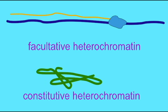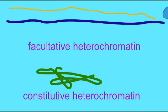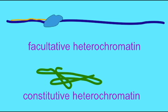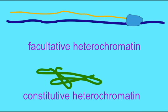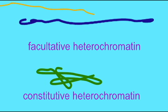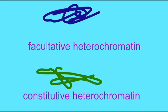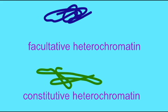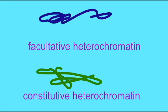Some sections of DNA are permanently wound tightly in the form of heterochromatin, and no expression of genes occurs in these areas. Such areas are known as constitutive heterochromatin.